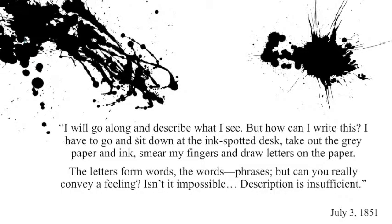In July 1851, Tolstoy wrote in his diary something I find really interesting. He says: 'I will go along and describe what I see, but how can I write this? I have to go and sit down at the ink-spotted desk, take out the gray paper and ink, smear my fingers, and draw letters on the paper. The letters form words, the words the phrases, but can you really convey a feeling? Isn't it impossible? Description is insufficient.' He's describing the writing process less as a verbal endeavor and more as a physical activity in which he's creating images on a page — not really writing, but more drawing. Letters merge to form words and phrases like small brushstrokes that blend together to produce an image.